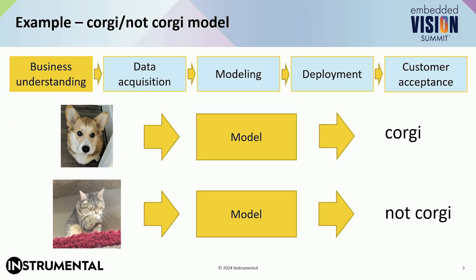Let's start from practical examples. Let's say I got a case from a customer: I need to train a model which will tell, basically, whether there is a Corgi on the image or not.